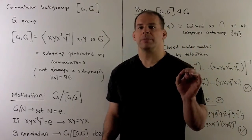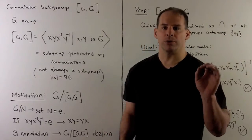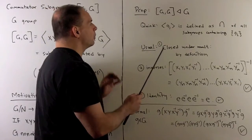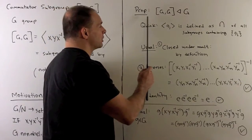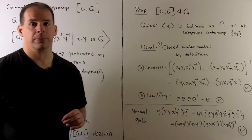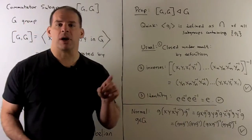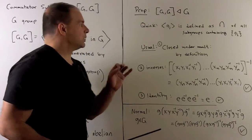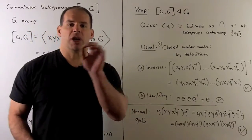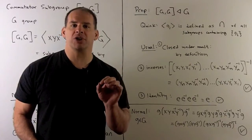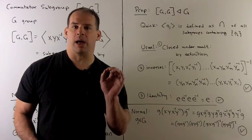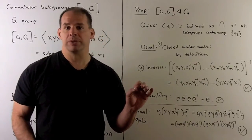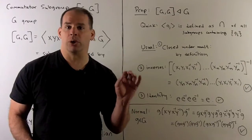We'll have more details to add to this, but first let's do some proofs. First proposition: we want to show that the commutator subgroup of G is a normal subgroup. For the subgroup property, you get that pretty much for free — the subgroup generated by a set of elements is just the intersection of all subgroups containing those elements. But let's do it the long way by showing our three properties.